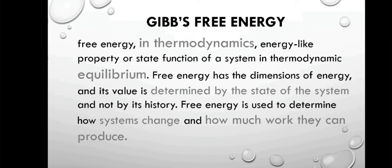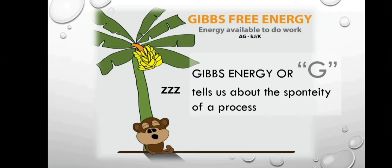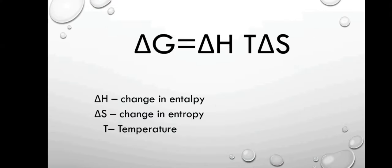Free energy is used to determine how systems change and how much work they can produce. Gibbs free energy, or G, tells us about the spontaneity of a process — whether a process will occur spontaneously or not, meaning it will simply happen on its own. The change in Gibbs free energy is given by an equation that includes change in enthalpy, change in entropy, and temperature. If delta G is negative, the process is spontaneous; if positive, it is non-spontaneous.